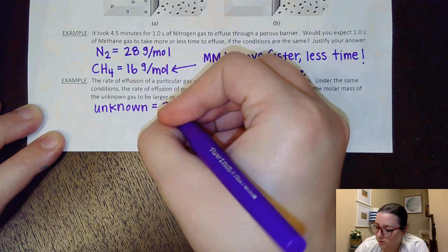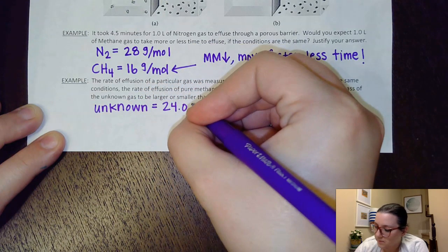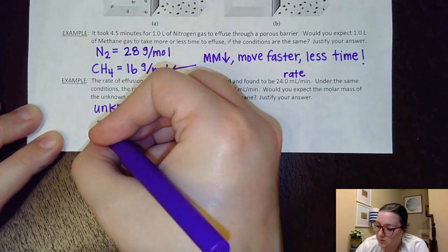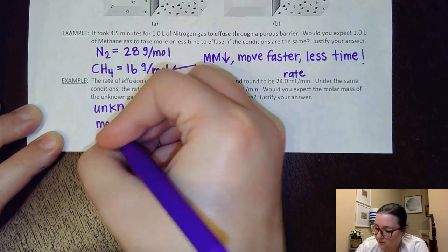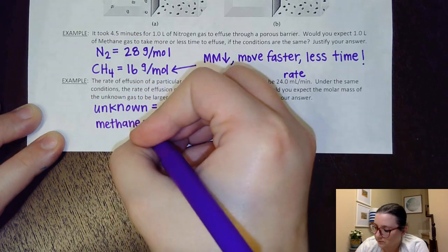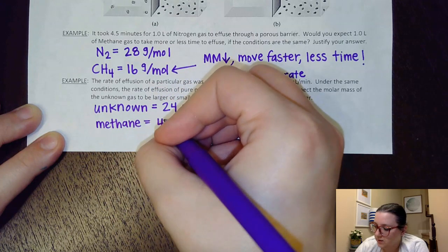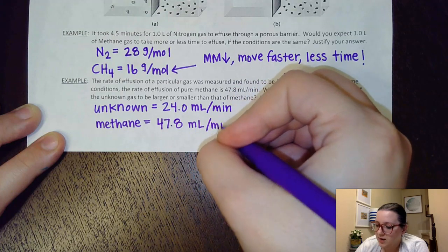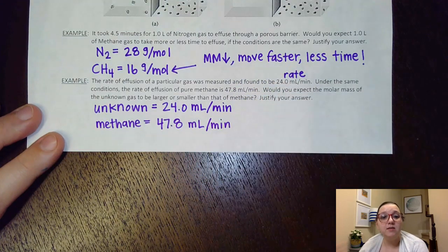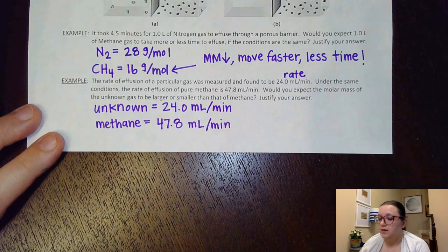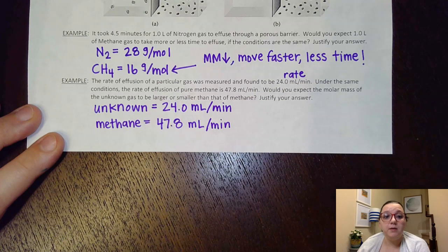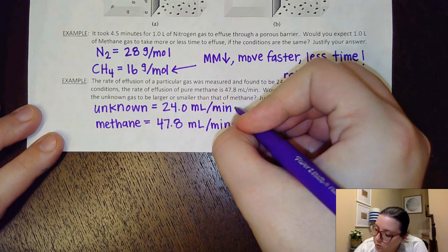They told me that the unknown is effusing at 24 milliliters per minute. They told me that the methane, which is again CH4, is at 47.8 milliliters per minute. And again, we're going to assume that these are at the same conditions. So they're at the same temperature. So kinetic energy on these would be the same. So it wants to know, hey, would this molar mass of our unknown be larger or smaller? Well, look at the rate.